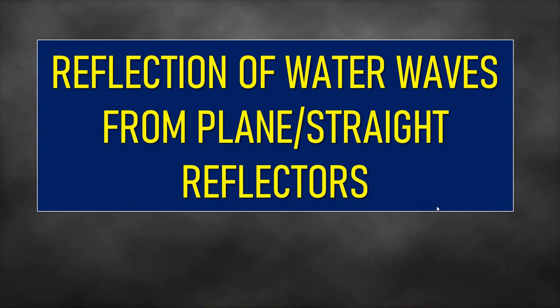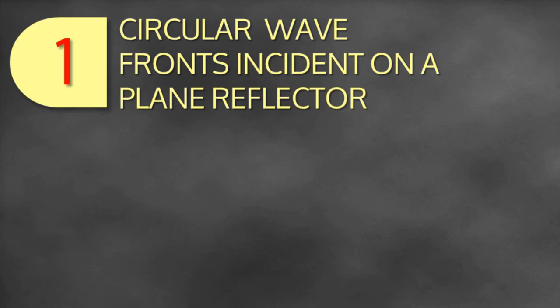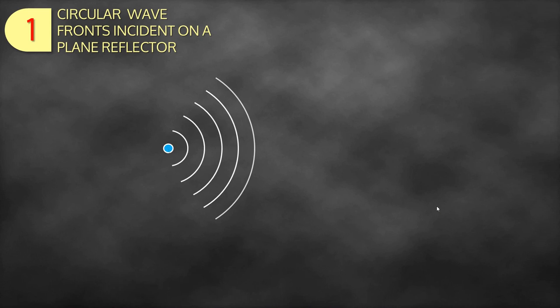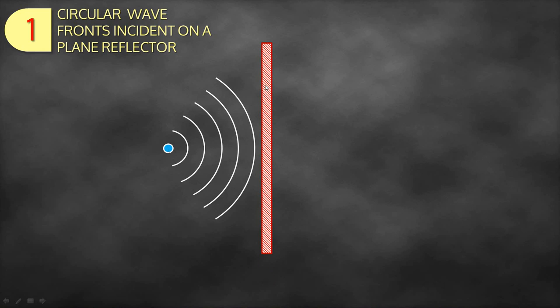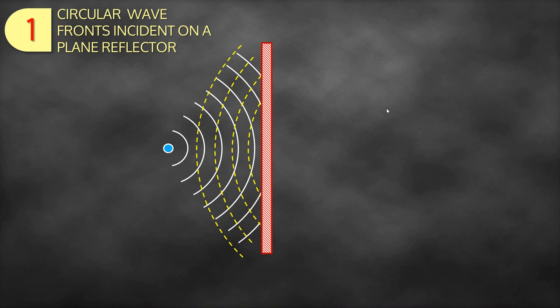Looking at reflection of water waves from plain or straight reflectors — case one: circular wavefronts incident on a plain reflector. The wavefronts come from a point source (the dipper). When they reach the plain barrier, they are reflected back. Taking two rays from the source perpendicular to the wavefronts and applying the laws of reflection, the reflected rays diverge but appear to come from a virtual image point behind the reflector.